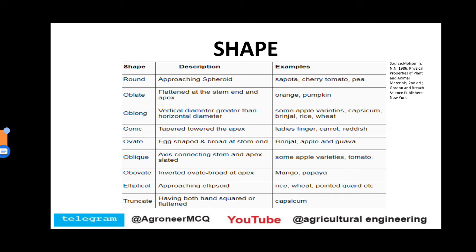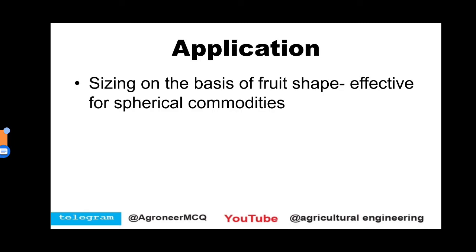Here we can see the different shapes, their descriptions, and their examples. We have to keep in mind the description, shape, and examples from an exam point of view. The application of shape: what we achieve by defining the shape of any particular fruit and vegetable is that with the help of shape we can do sizing on the basis of fruit shape.